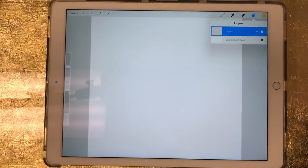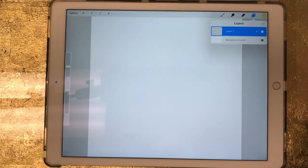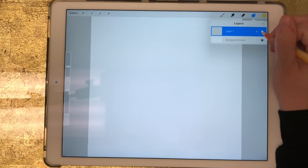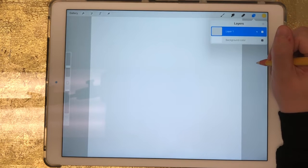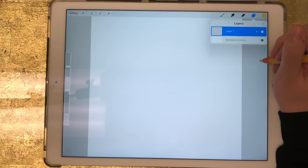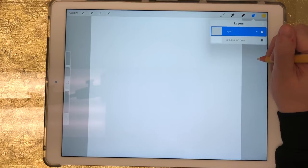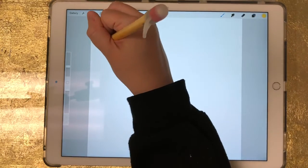First thing you need to know is right when you create a new document in Procreate, it will give you—and this is for when you create a blank document, not when you import a photo—it'll just automatically start that first layer for you. So I'm on layer number one right now, which it automatically has there for me, so I'm just going to write the number one.